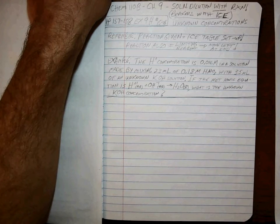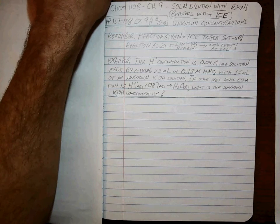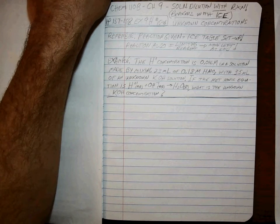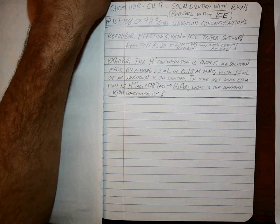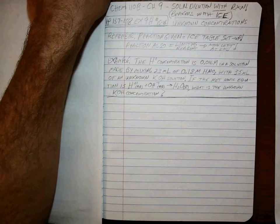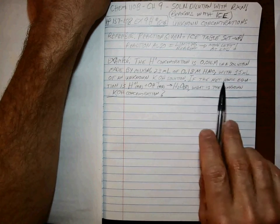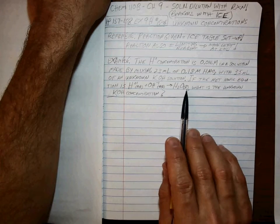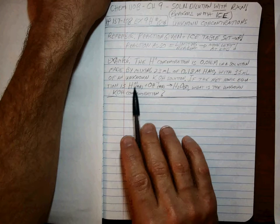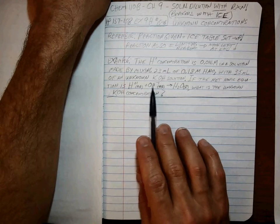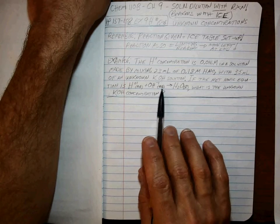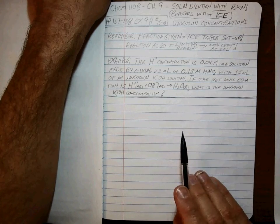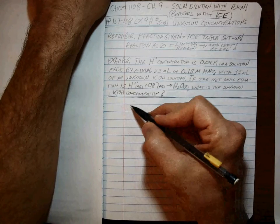Let's look at the problem. The H+ concentration is 0.016 molar in a solution made by mixing 23 milliliters of 0.18 molar nitric acid HNO3 with 35 milliliters of an unknown KOH potassium hydroxide solution. This is strong acid plus strong base. The net ionic equation for strong acid, strong base is always H+ plus OH- makes H2O liquid. The ions that are the acid ions react with the base hydroxide ions and they make water, a pure liquid. What is the unknown KOH concentration? So we're doing beakers.